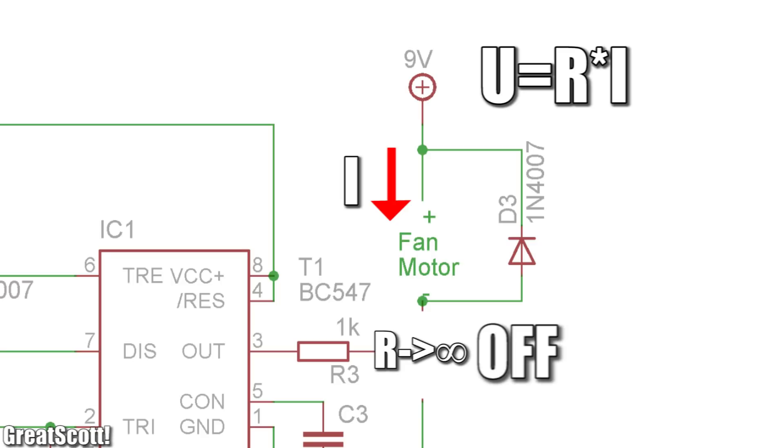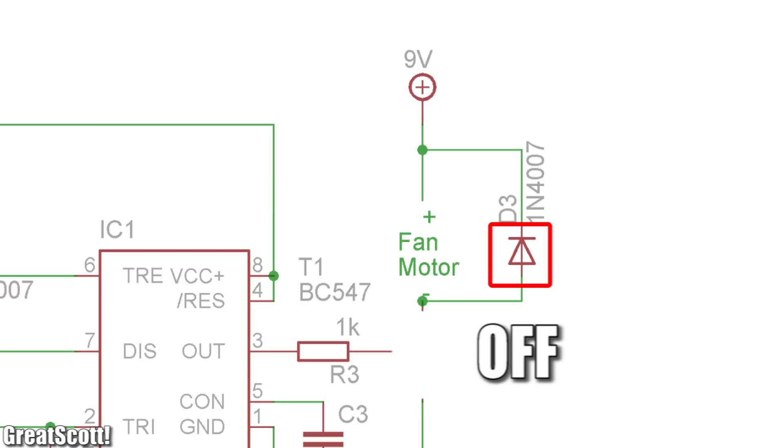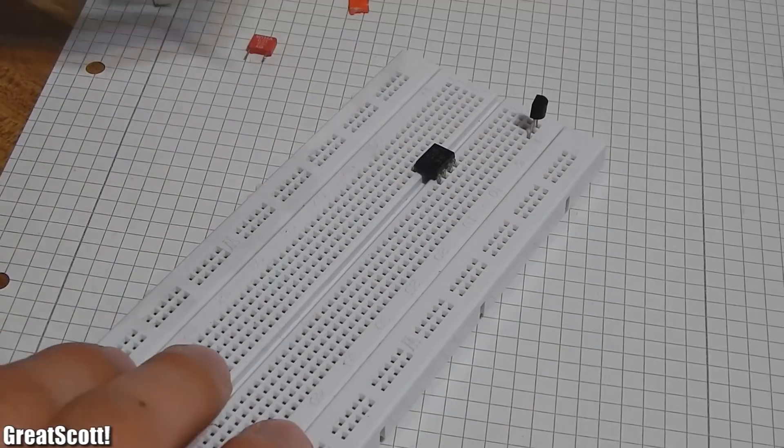But we have an open circuit, so our resistance is theoretically infinite. And Ohm's law tells us that voltage equals resistance multiplied by current, and when resistance is really high, then the voltage will be really high as well. Big voltage spikes are produced which are capable of destroying our transistor. That is why we use a diode here, so our magnetic field can safely discharge through the diode.